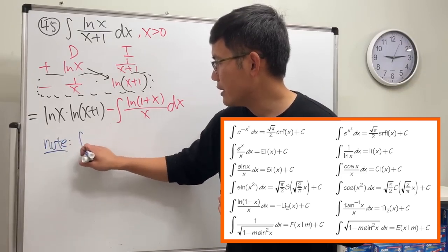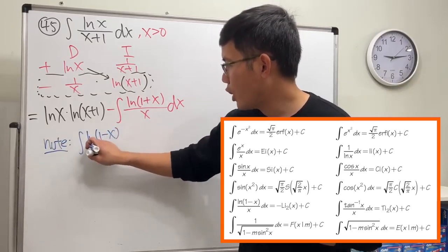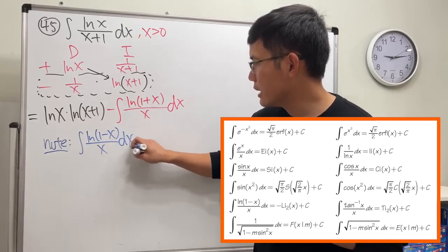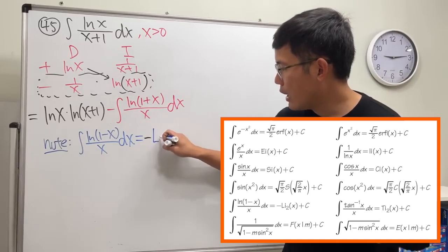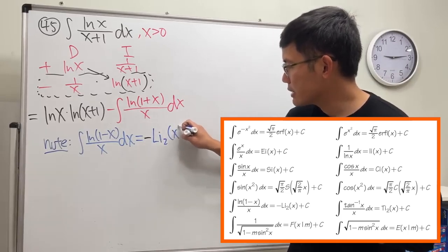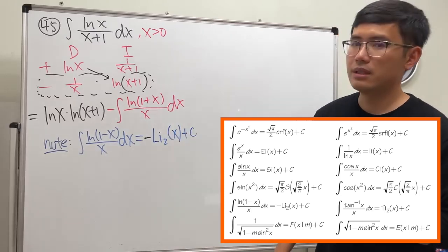If today we have the integral of ln(1-x) over x dx, this right here gives us negative li₂(x) + C. And now they look very similar, right?